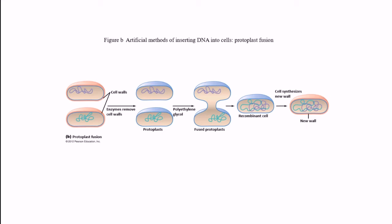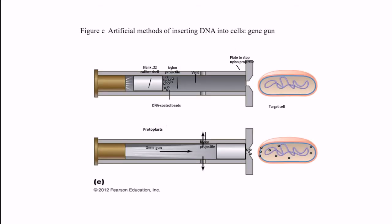Your genetic material recombines and there is a recombinant cell. When the temperature is reduced, cell synthesis occurs - there is a new cell wall. You can see here this is a recombinant fused cell with a new cell wall. Next is the gene gun method.